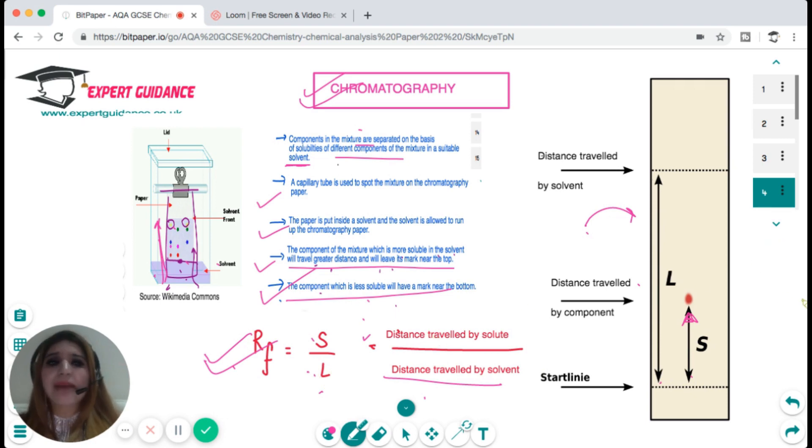For example, in this figure if you see, L is the distance the solvent has traveled and S is the distance the component has traveled. So retention factor is S over L. In the exam they can give you a chromatogram with different distances and ask you to find the retention factor. You should know the principles of chromatography and how it is done.